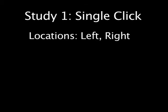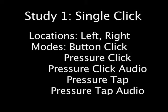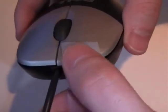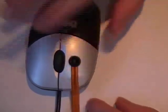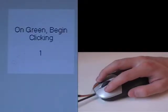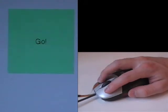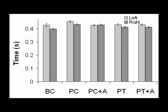In our first study, we tested users' ability to single click, comparing the left and right mouse buttons with the four P button modes in the left and right mouse button locations. To test a sensor in place of the mouse button, we first disabled the mouse button by taping it down, and then attached the sensor to the top of the button location we are testing. The experimental setup required the subjects to single click when a timer reached zero. Our results show that there is no significant difference between modes, with button click and pressure tap being fastest overall.